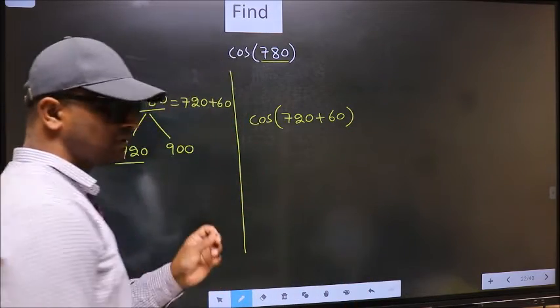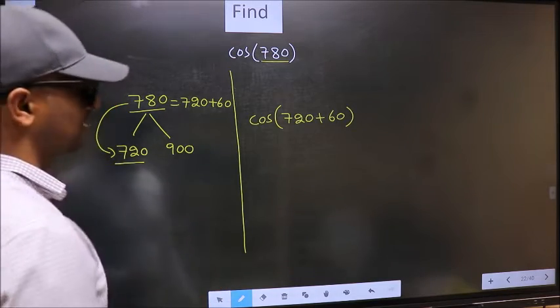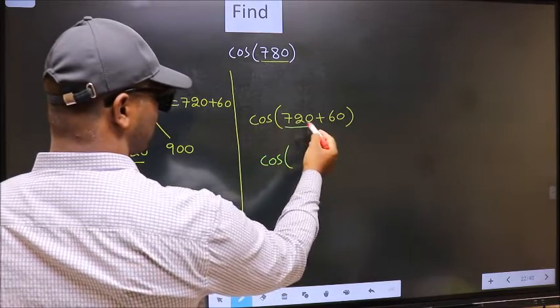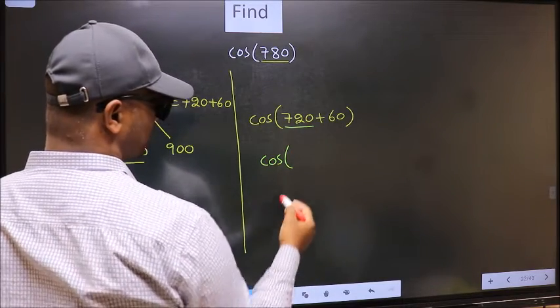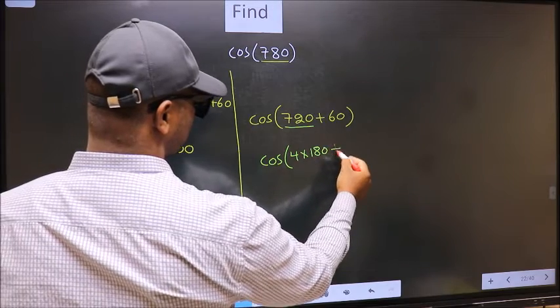This is your step 1. Next, cos—in place of 720 now we should write 4×180 + 60.